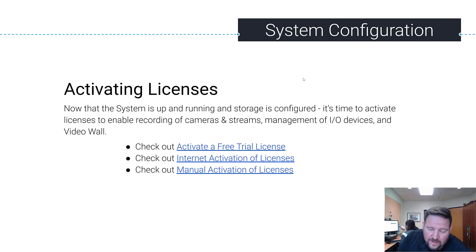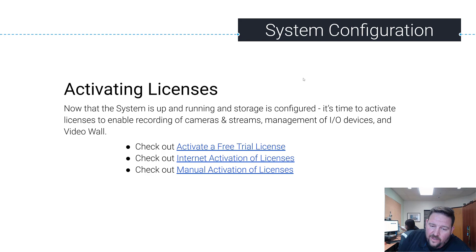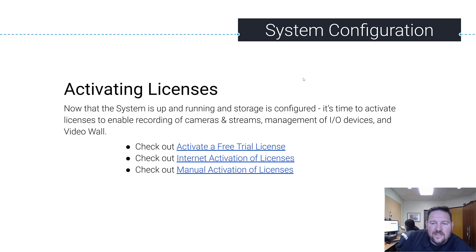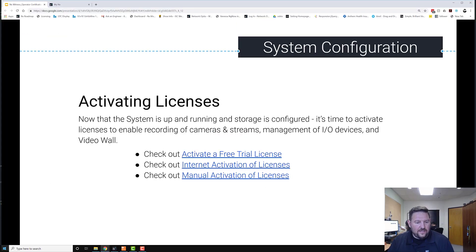The other way is manual activation. With manual activation, you need to create a hardware ID — there's a support portal article that walks you through it. You grab your hardware ID, email it to us, and we email you back a license key that you can then import into the system to activate licenses.